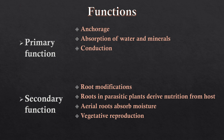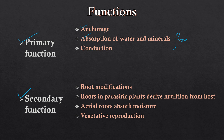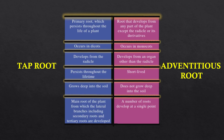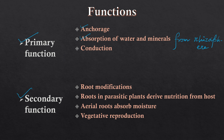Now we will come to the functions. Functions can be broadly divided into two parts: primary and secondary. Primary functions are anchorage — roots fix the plant with the substratum; absorption — it absorbs water and minerals from the rhizosphere; and conduction — it sends absorbed materials to other parts of the plant. Secondary functions include root modification for storage, support, and other vital functions.